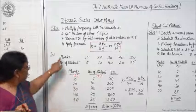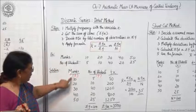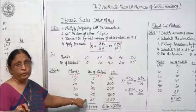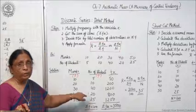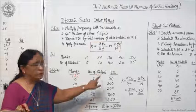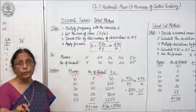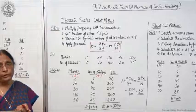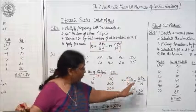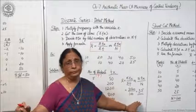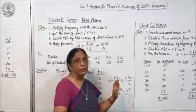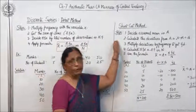Always remember: the marks column will be x, and the frequency column will be named as f. Frequency or the number of any item given is always shown in the form of f. So multiply both the columns, apply the formula, and get the answer. Now this is the direct method — now we come to the shortcut method.